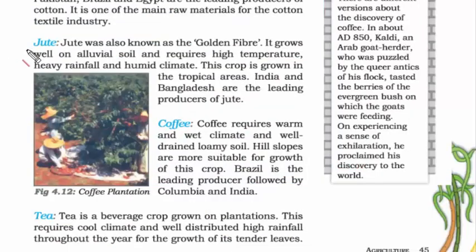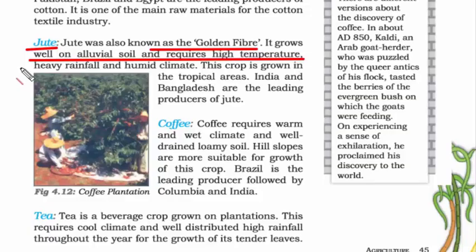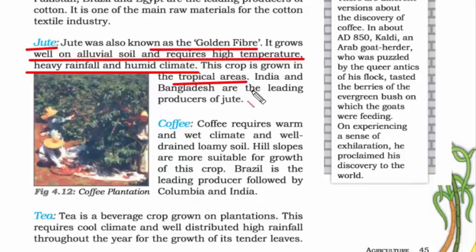Jute, also known as the golden fiber, grows well on alluvial soil. It requires high temperature, heavy rainfall, and a humid climate — fine qualities of the tropical and subtropical region. India and Bangladesh are the leading producers of jute.